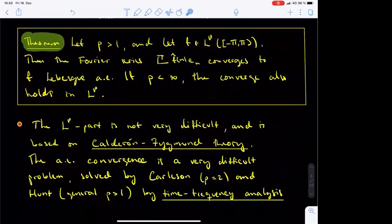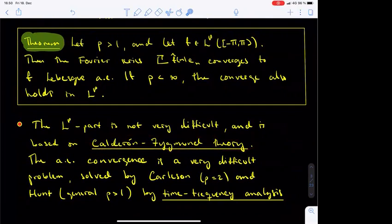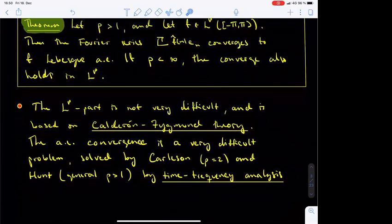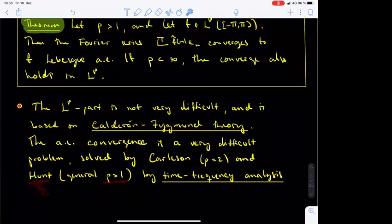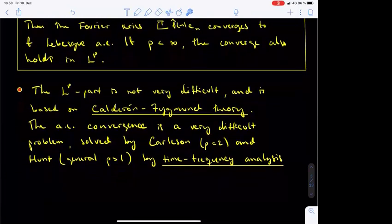The final part concerning the LP convergence of Fourier series is not too difficult. It is based on a technique known as Calderón–Zygmund theory. The pointwise convergence, on the other hand, is a very difficult problem. It was solved by Lennart Carleson in 1966 for the exponent p equal to 2, and two years later by Richard Hunt for general exponents p. The technique behind the pointwise convergence result is known as time-frequency analysis.